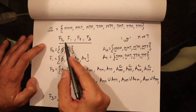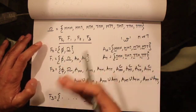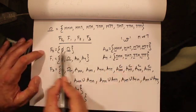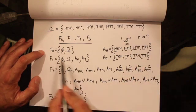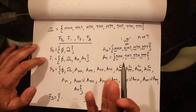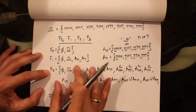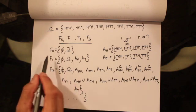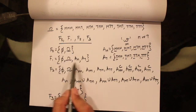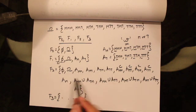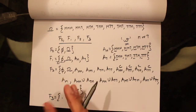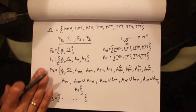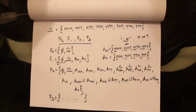The basic idea of filtration is that as we toss more and more coins, the information available to us becomes more and more refined. Without tossing any coin we have very little information about omega. After the first coin, four sets are resolved. After two coins, more sets are resolved. Also, all sets in F0 are also in F1, all sets in F1 are in F2, and all sets in F2 are in F3 — that is the key property of filtration.